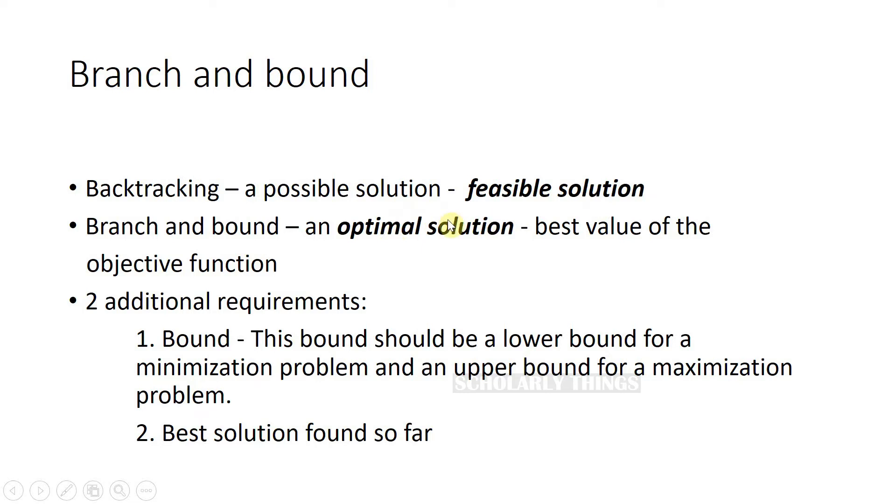Whereas an optimal solution is a feasible solution with the best value of the objective function. Example: the shortest Hamiltonian circuit or the most valuable subset of items that fit the knapsack. This concept of branch and bound helps us to find an optimal solution for a given problem.